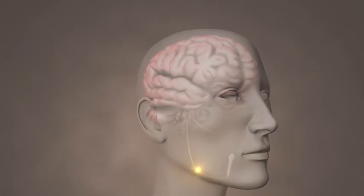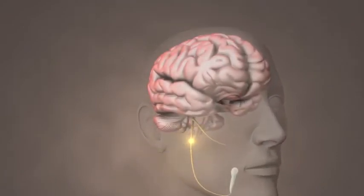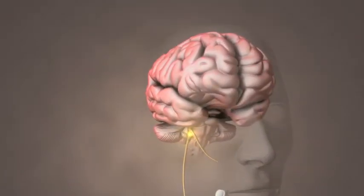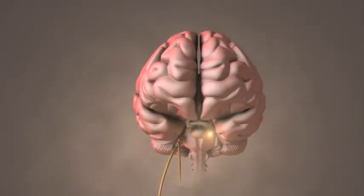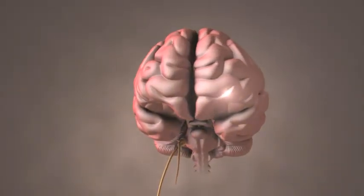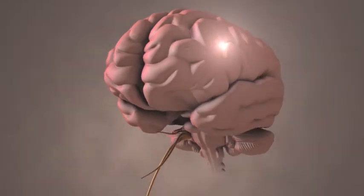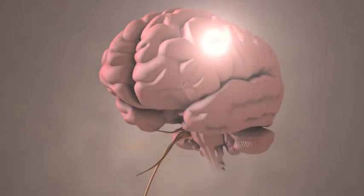These nociceptors generate action potentials which are orthodromically conducted along their associated nerve fibers into the brain, where they pass through the brain stem to various parts of the thalamus and cerebral cortex. There, this sensory information may be processed as pain.